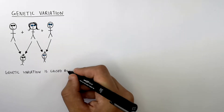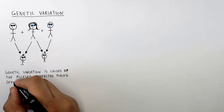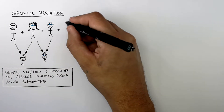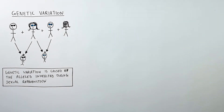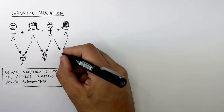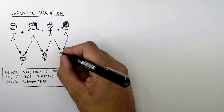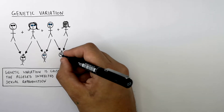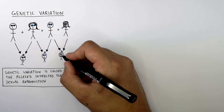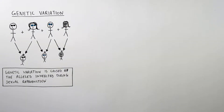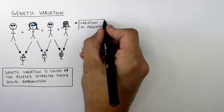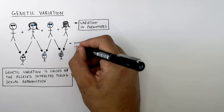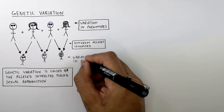So genetic variation is caused by the alleles inherited during sexual reproduction. The man then has a child with a woman with a different skin colour to him, so they've got a variation in phenotype. Phenotype is the characteristic you see, so different alleles will be inherited. This baby has inherited the gene for the skin colour from the mother, and the darker eye colour from the mother, which is a variation in phenotype in the child. The alleles you inherit from your parents leads to variation in the phenotype of the offspring.